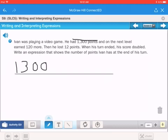The next level, he earned more. So if you're earning more, you're adding to it, which would be 120. Then he lost 12. When you're losing 12, you're subtracting. So you subtract 12 points from that, like that.